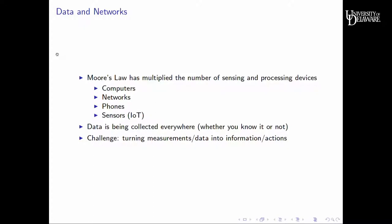As motivation, a lot of what's happening today can be traced back to Moore's Law and what it has done for computing. One consequence is the multiplication of devices we use for sensing, computing, and communicating — phones, tablets, computers — and our exposure to sensors in various places. There's a lot of interest in the Internet of Things and how sensors can communicate. Data is being collected everywhere, whether you know it or not, in your interactions online and in the real world. The challenge is turning these measurements into information, and one important issue is privacy.